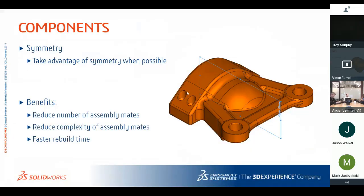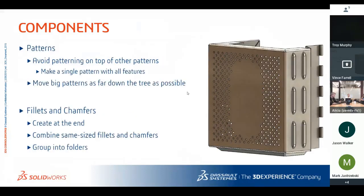Use symmetry wherever possible. Doing half a model and mirroring it reduces the number of assembly mates, reduces complexity, and speeds up rebuild time. For patterns: avoid patterning on top of other patterns — pattern a core feature instead. Move large patterns as far down the feature tree as possible to avoid creating references to them and to allow you to suppress them. For instance, small holes in a pattern probably don't need to be visible at the top-level assembly — suppress them in a simplified configuration.